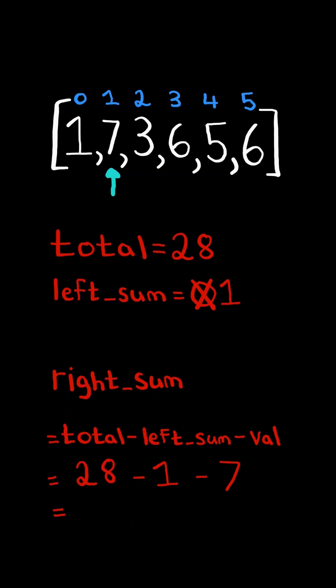We calculate the right sum using the equation. It equals 20, and notice again, the left sum is not equal to the right sum. So we take the current value we are on and add it to left sum, and we continue.